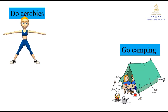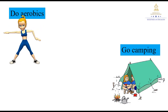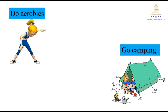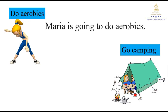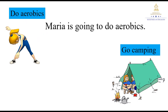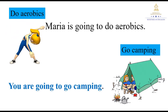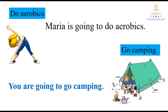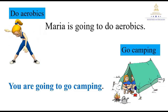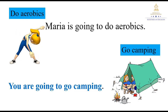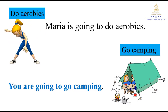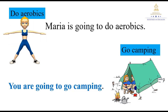Look at the following activities: do aerobics — hacer ejercicio o hacer aerobic — and go camping. Acampar. Now look at the sentences: Maria is going to do aerobics. You are going to go camping. Now repeat: do aerobics, Maria is going to do aerobics. Go camping. You are going to go camping.